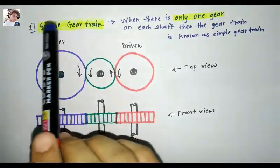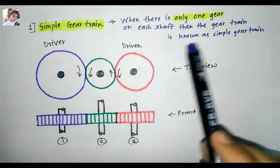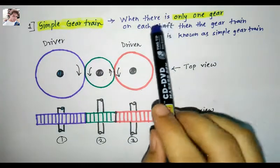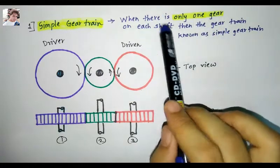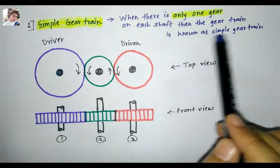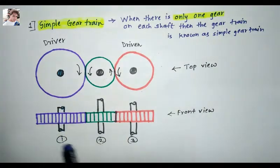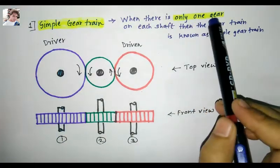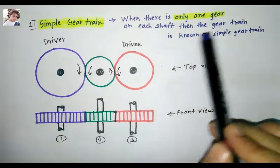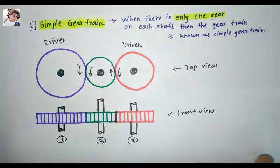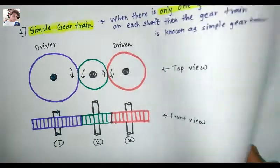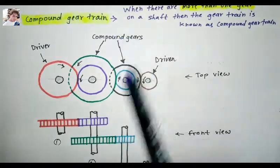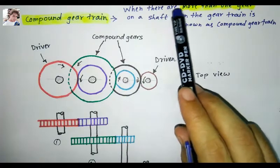The first type is a simple gear train. This is the arrangement when there is only one gear on each shaft. When there is only one gear on each shaft, the gear train is known as a simple gear train.